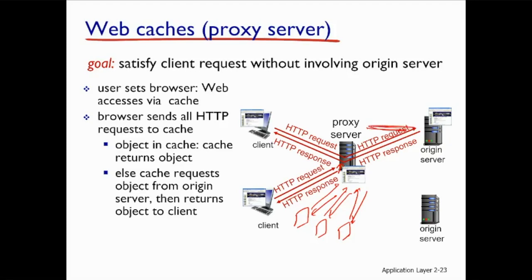So the proxy server, or the web cache, is very important because it limits the traffic on your internet access link. On your access link, what we are trying to do is minimize the traffic. Imagine if every time we send the request to the original server — there will be a lot of traffic on this internet access link.